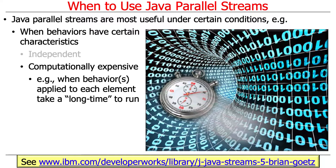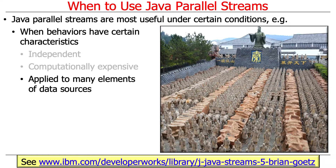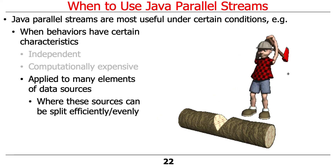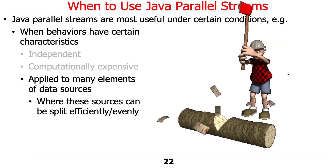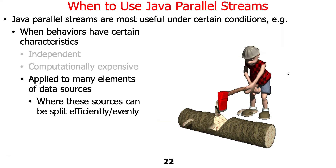Another characteristic that leads to good behavior for parallel streams is when the operations you're doing in parallel are computationally expensive — when behaviors applied to each element in the input stream take a long time to run. Something that operates very quickly probably isn't going to get you much of a win. Yet another important characteristic is if you have lots of elements to apply the computations to. Especially when the sources of data can be split efficiently and evenly into even-sized chunks — that's kind of the ideal situation.